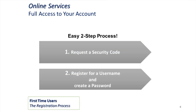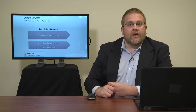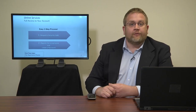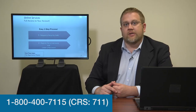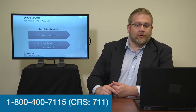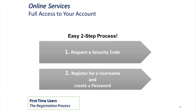This is an easy two-step process. The first step is you need to request a security code from us. We will mail you a physical copy of the security code in five to ten business days. We are also able to give it out over the phone if you call us at our customer service center, 1-800-400-7115. Once you have your security code, you can come back and register for a username and create a password.